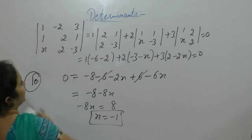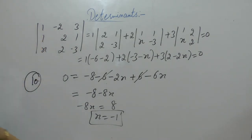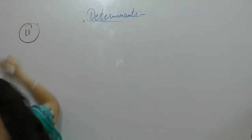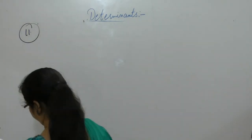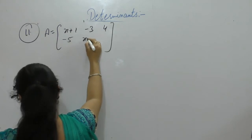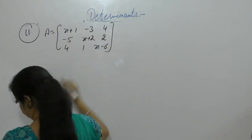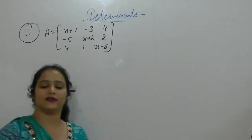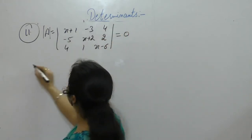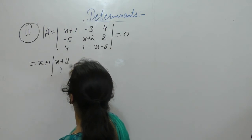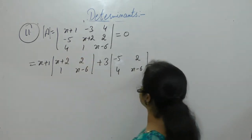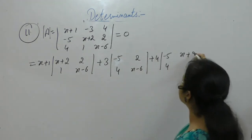Next: for what value of x is the matrix singular? A matrix is singular if its determinant equals 0. The matrix involves elements with (x+1), (x+2), 1, (2x), -5, 4, and related terms. Find the determinant and set it equal to 0.